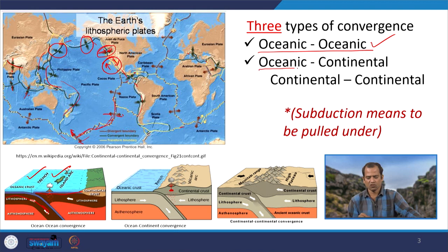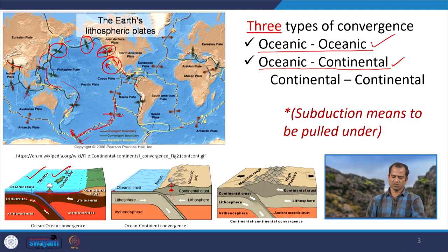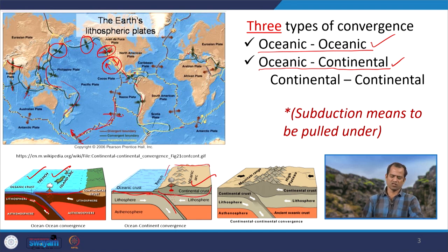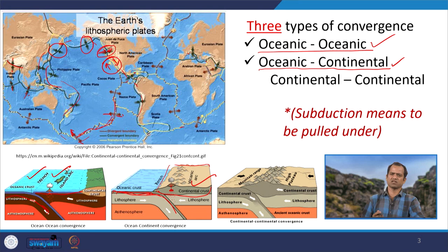The second type is oceanic-continental convergence, where one plate is oceanic and the other is continental. The oceanic plate subducts under the continental plate because it is heavier — there is a density difference between basaltic oceanic crust and the granitic to granodioritic continental crust. Being heavier, the oceanic plate goes down.